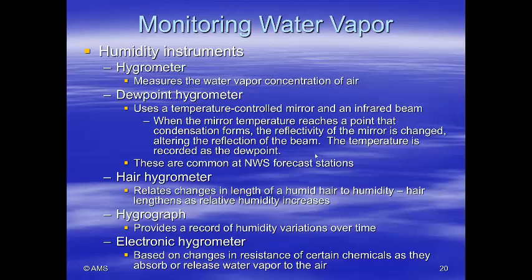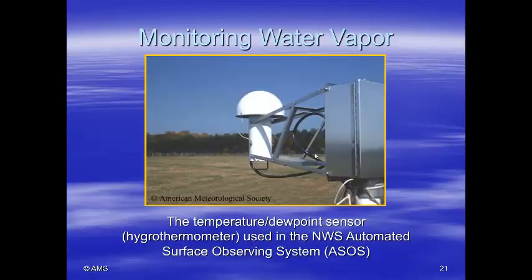A hygrograph provides a record of humidity variations over time. A less precise but easy-to-use method is the electronic hygrometer, based on changes in resistance of certain chemicals as they absorb or release water vapor. Also shown is the temperature dew point sensor and hygro-thermometer used in the National Weather Service automated surface observing system.